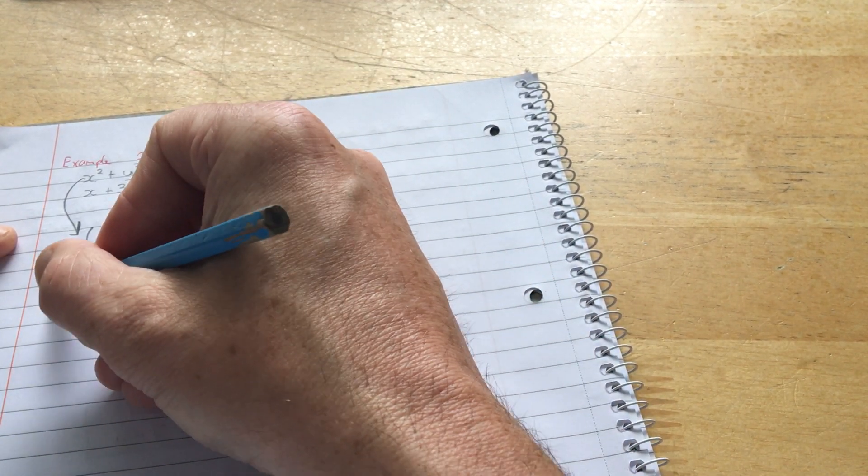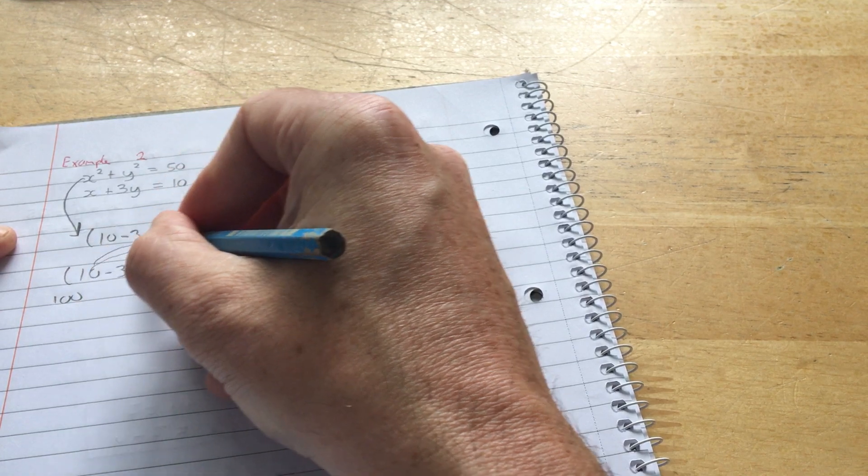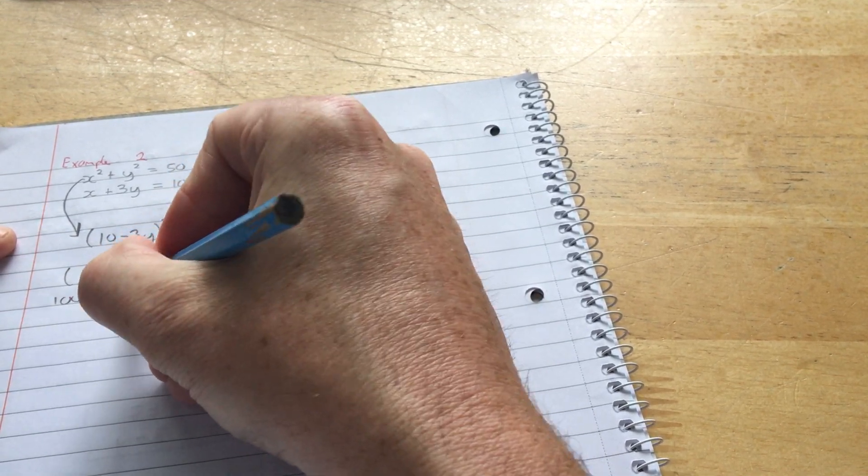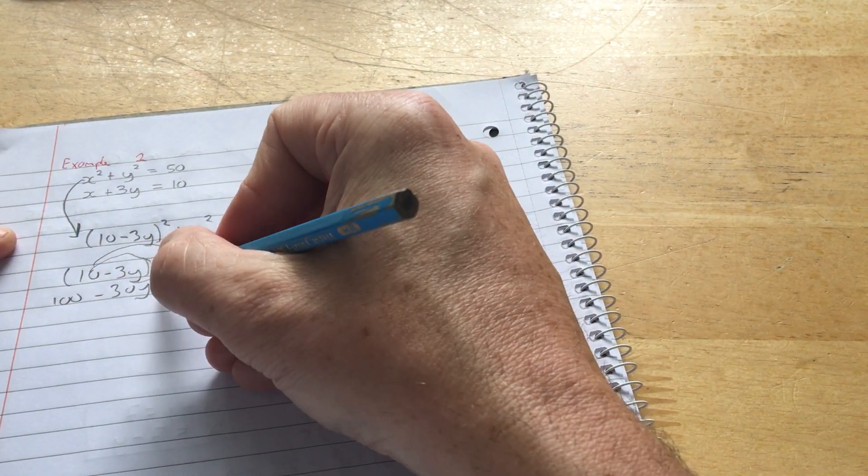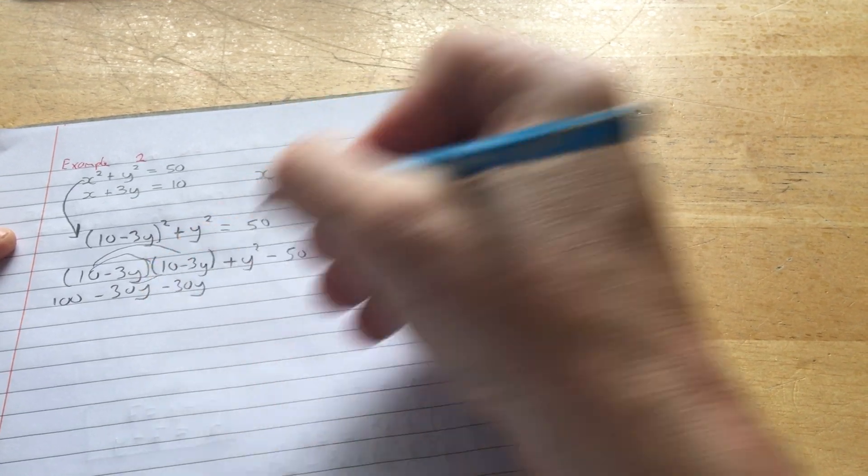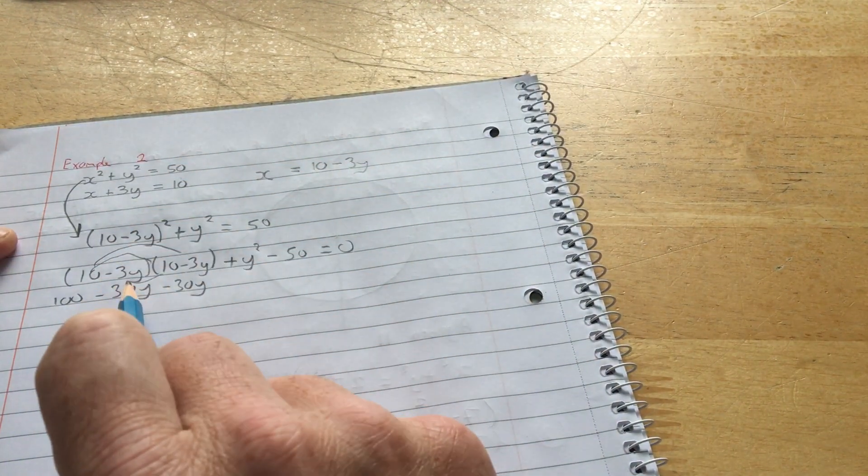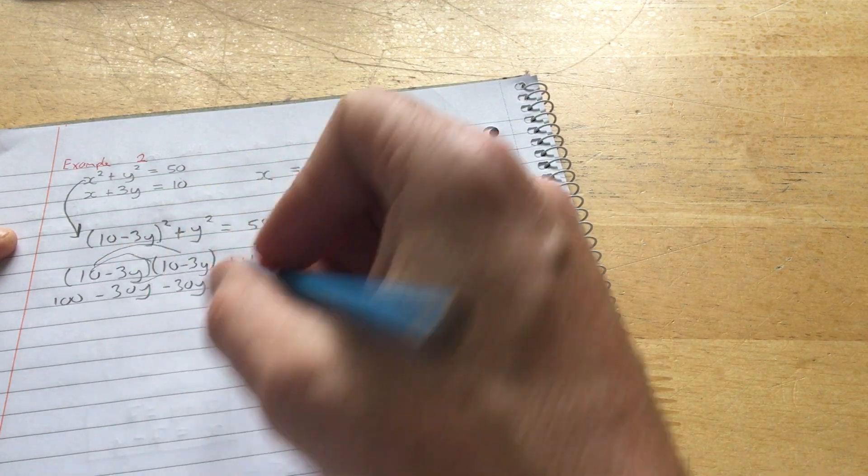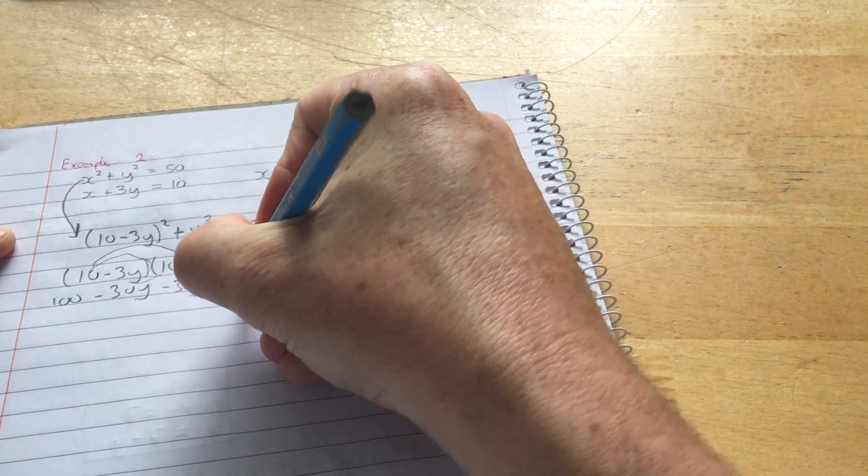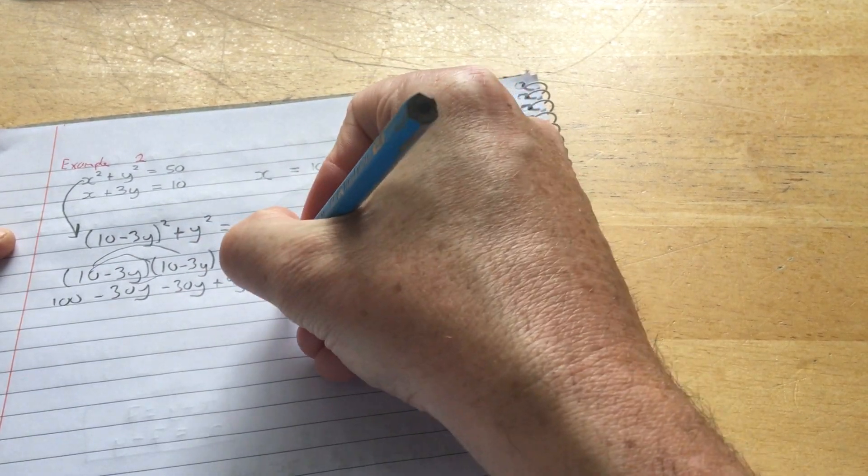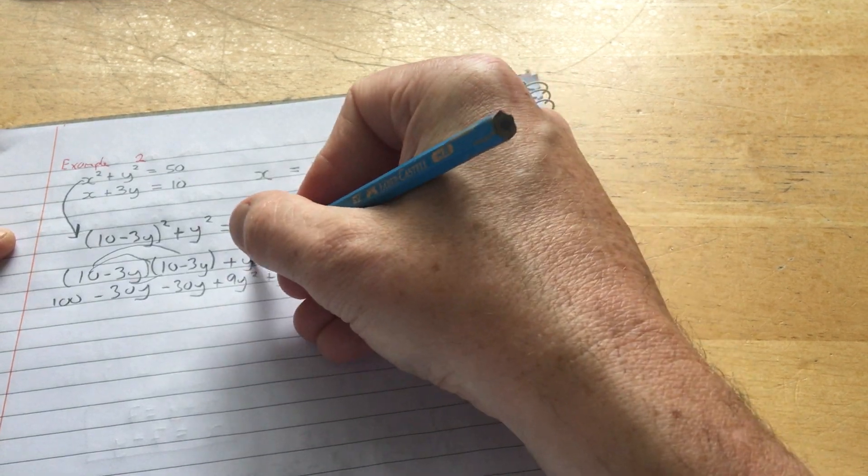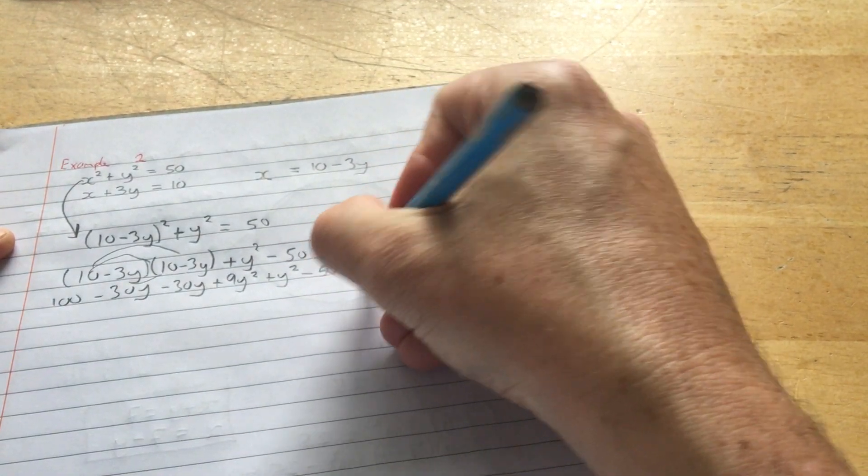10 by 10 is 100. And then 10 by minus 3 is minus 30y. Minus 3 by 10 is minus 30y. And then minus 3y by minus 3y is plus 9y squared. Then plus y squared, this y squared, minus 50 equals 0.